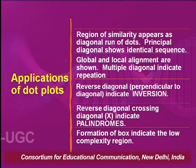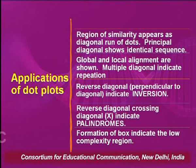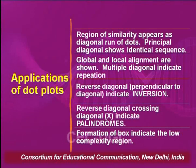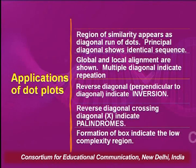The principal diagonal shows identical sequences, and we can also know about global and local alignments. Additional diagonals tell us the sequence resembles other regions. Multiple diagonals can be interpreted, and the reverse diagonal shows an inversion. We can also identify palindromes in the sequences, and formation of boxes indicates low-complexity regions.